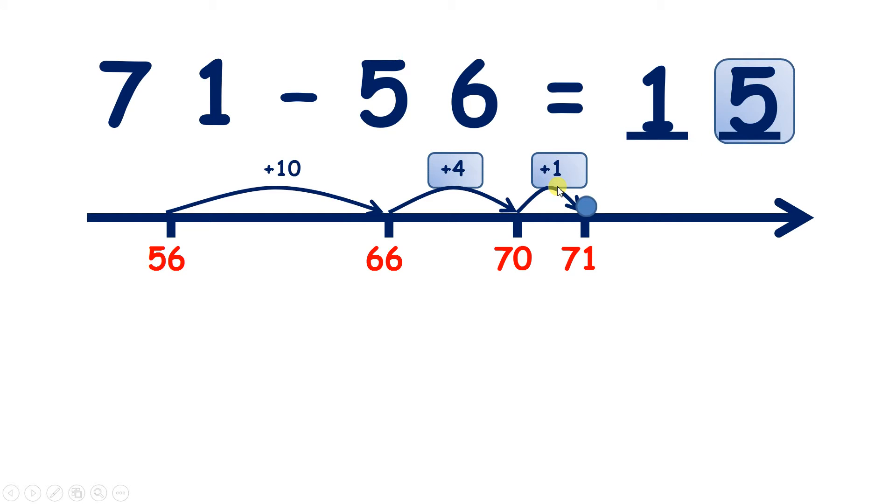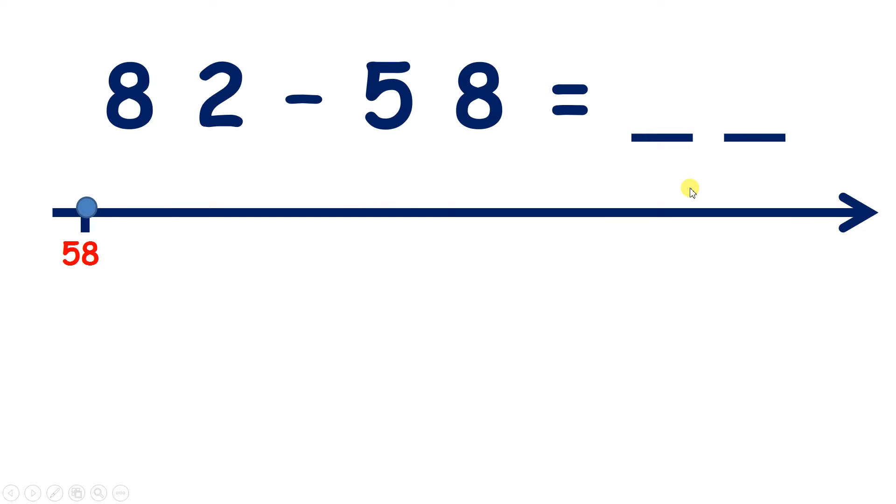Now 82 subtract 58. So if we're counting in tens from 58 we have 68, 78, and we're going to stop there. Why are we not going to add another 10? Well, if we added another 10 we'd have 88 and that would be too many. So we have two tens.